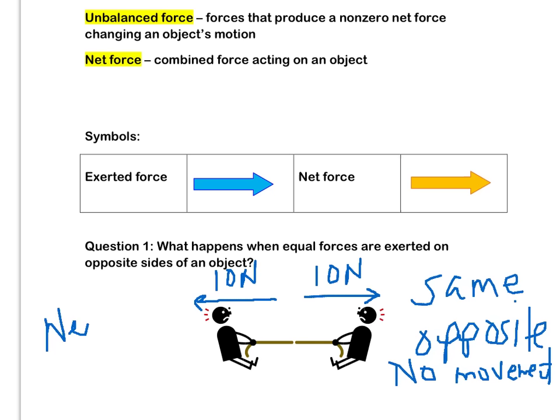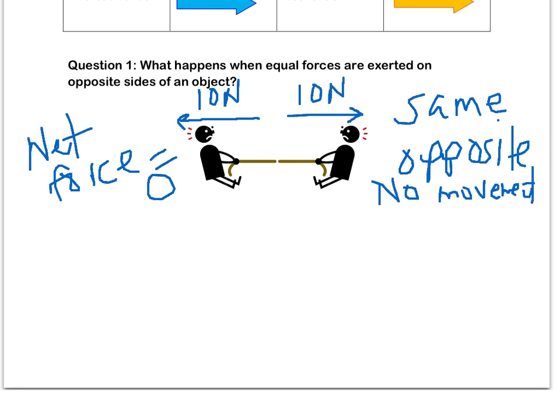Because we have a net force of zero. The key here is equal and opposite. The same amount of force is being applied, but it's being applied in two different directions, which means we're not going to have a clear winner here.